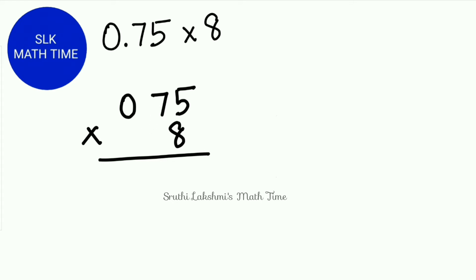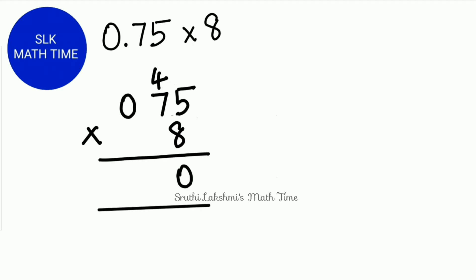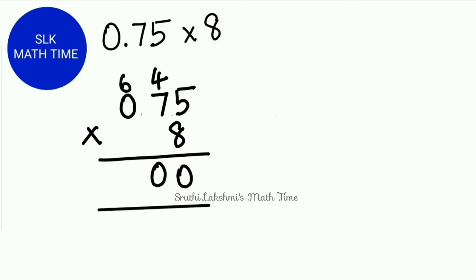We multiply 8 times 5 which gives us 40. We write the 0 and carry the 4. Next we do 8 times 7 which is 56, and 56 plus 4 is 60. So we write the 0 and carry the 6. Then 8 times 0 is 0, and 0 plus 6 is 6. So the answer for 75 times 8 is 600.